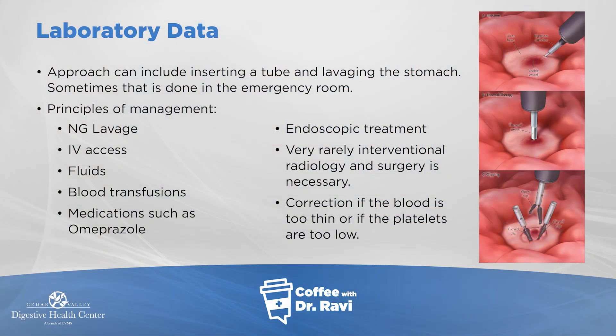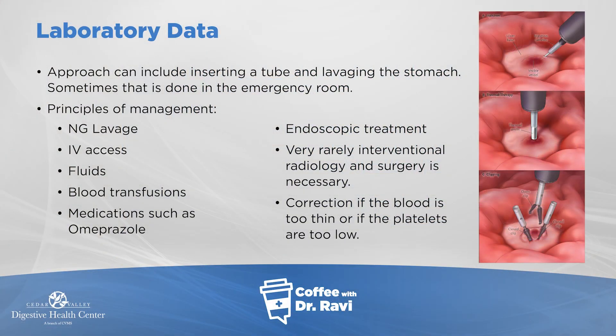On top of the epinephrine injection, we apply a small probe and use heat or coagulation to seal up the blood vessel, or we use clips. For esophageal varices that are bleeding, we use a technique called banding — which sucks the varices and places a small rubber band around them. Very rarely, if we can't control bleeding with the camera, we go through the groin or an artery to plug it from the inside using interventional radiology. Surgery is required only in extremely rare cases. Managing other medical conditions and keeping the blood values correct are also important principles.